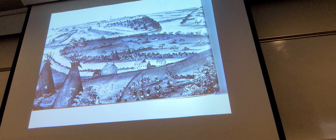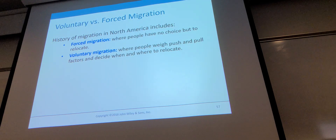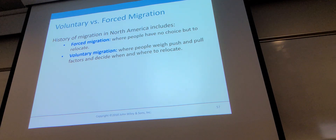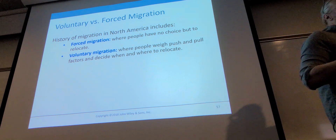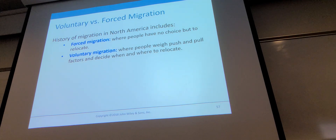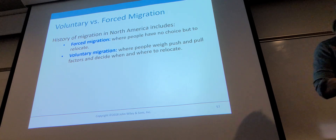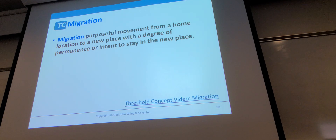This is a drawing of Fort Snelling and local indigenous housing, similar to what I showed you in the recreation. Migration — this chapter talks a lot about migration because there are good examples people already know. Forced migration versus voluntary migration: you can tell what each means from the term itself. There's been a history of both in the United States.